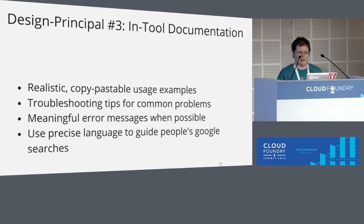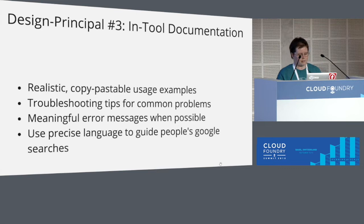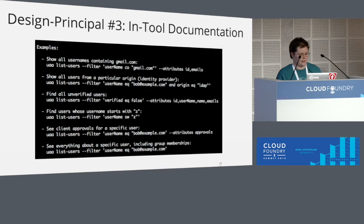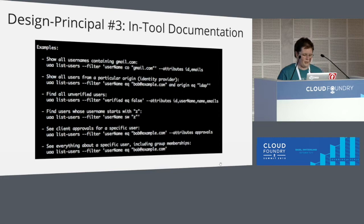Meaningful error messages are more aspirational — that's a longer-term thing that will require some changes in the UAA server. And just language — using the right words so that when people see something they don't understand in the help, they can go to the internet and find other resources. These are low-tech things, but communication is really powerful and you can actually give people a better experience simply by putting the information where they need it. There's a screenshot from one of the help strings for searching about users showing how you can query the UAA — for example, how would you find a user whose email is bob@example.com? Well, there's an example right there.